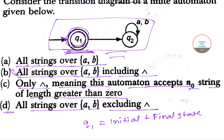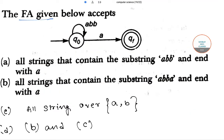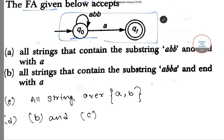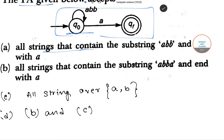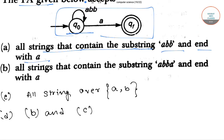Let's move to our next question about the FA given below. This is the transition state diagram. It will accept: A — all strings that contain the substring ABB and end with B; B — all strings that contain the substring ABBA and end with A; and C — all strings over A and B.